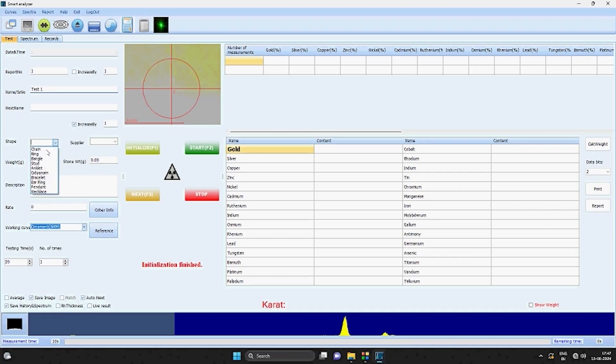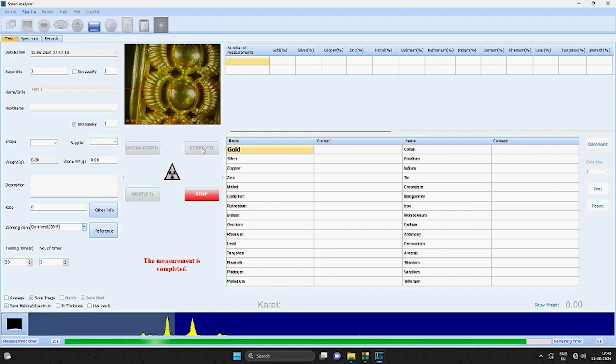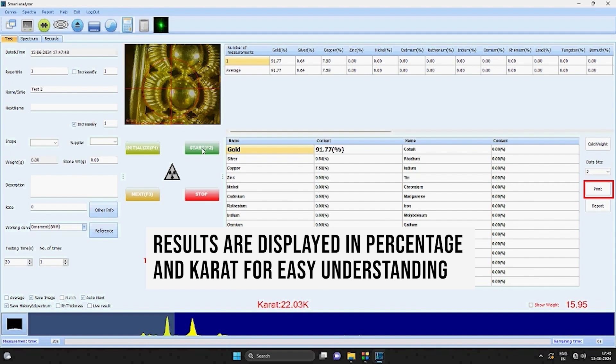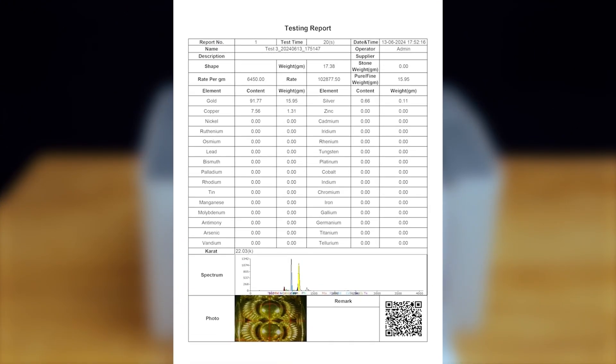When testing jewelry, users can input various fields such as customer name and ornament description, making Redlands software unique in the industry. Within fractions of seconds, the software shows results in real time, concluding testing within 20 seconds. Results are displayed in percentage and carat for easy understanding, providing clear valuation for tested ornaments.